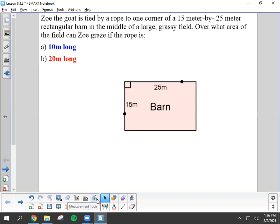So we want to figure out how much of the field she can graze if the rope is 20 meters long. Now, when you have a rope tied to a single point, it basically will create a compass type situation. So what that means is I'm going to get my handy compass and put the point of the compass right here on the corner where Zoe would be tied up.